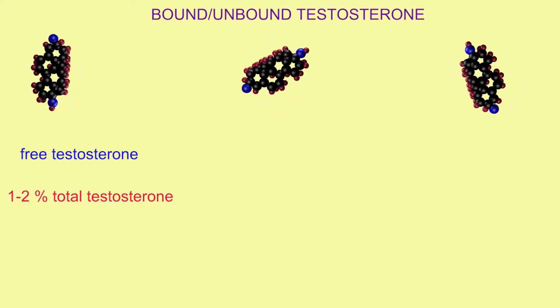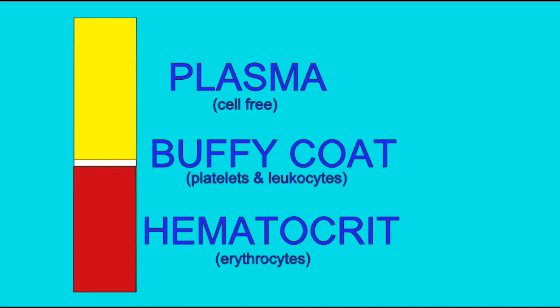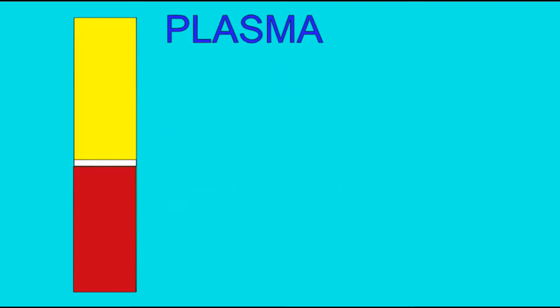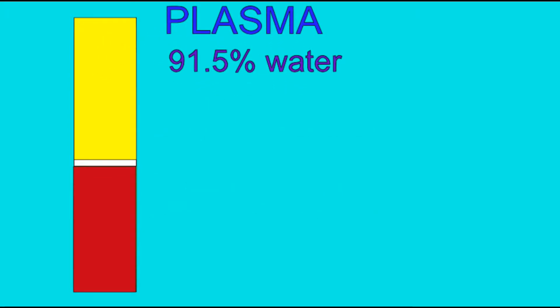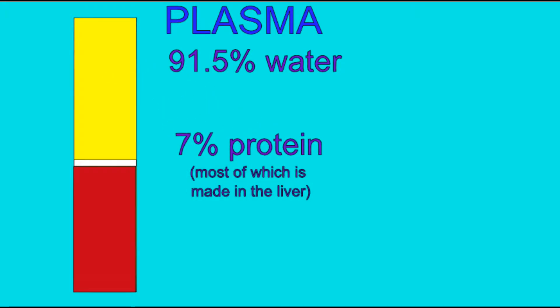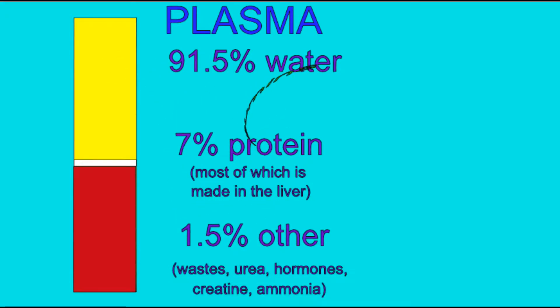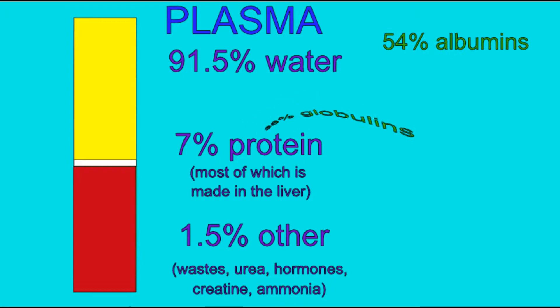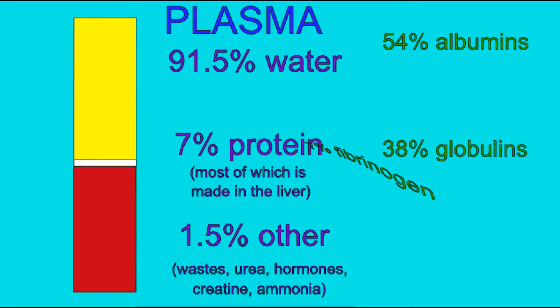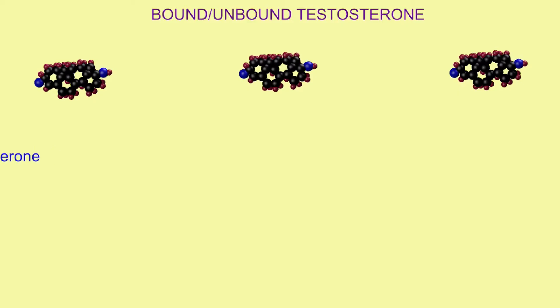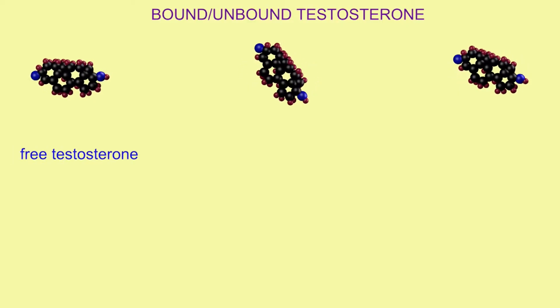Much of it is transported by a plasma protein known as albumin. This could be less than half or slightly more than half, and testosterone loosely binds to albumin, meaning that in tissues it can dissociate and then is available for use in the tissues.